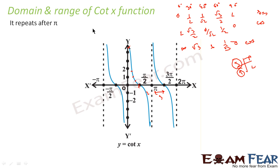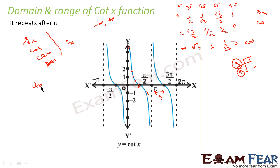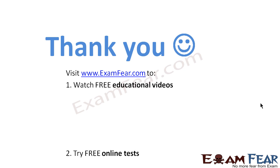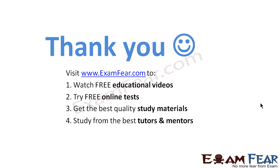The range of cotangent is −∞ to +∞. To summarize: sin, cos, cosec, and sec repeat after 2π, while tan and cot repeat after π. Thank you. Visit examfear.com to watch free educational videos, try free online tests, get the best quality study materials, and study from the best tutors and mentors.